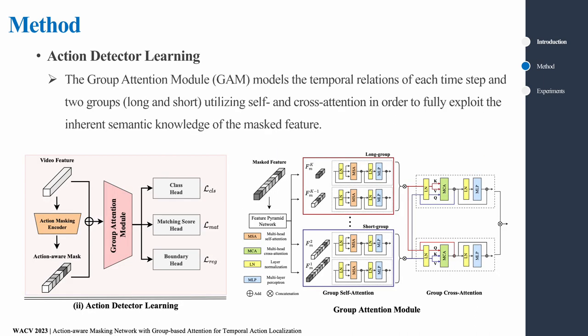To fully utilize the inherent semantic knowledge of the masked feature, we present a group attention module that models the temporal relations of each time step with two groups. Specifically, we use a feature pyramid network to multiscale it to capture actions of different lengths based on the masked feature. In order to consider the characteristics of each multiscale feature, we supplement the temporal information by dividing it into two groups based on the length. After each self-attention, the groups will conduct a final temporal modeling through cross-attention.